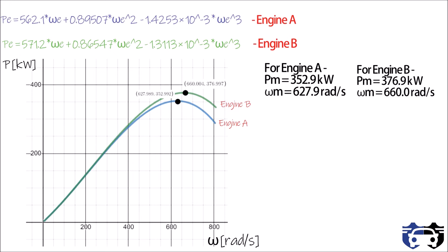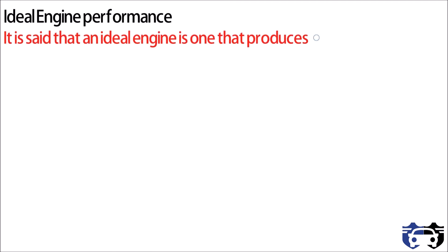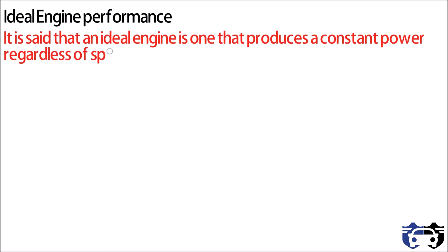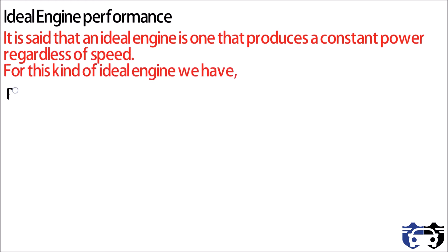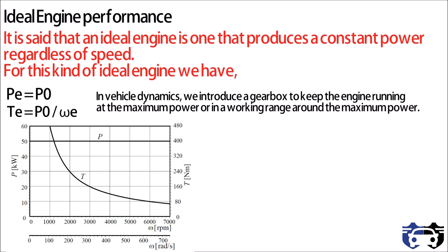If we take the case of ideal engine performance, an ideal engine is defined as one that produces constant power regardless of speed. For this kind of ideal engine, pe equals p0, which is constant, giving torque equals p0 divided by omega e. In vehicle dynamics, a gearbox is introduced to keep the engine running at maximum power or in a working range around maximum power.